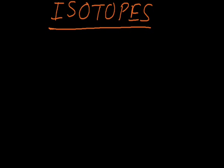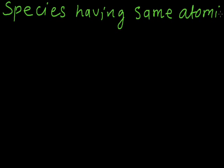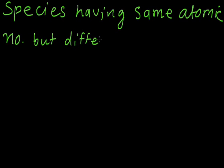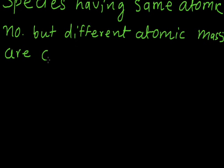What are isotopes? Species having the same atomic number but different atomic mass are called isotopes.